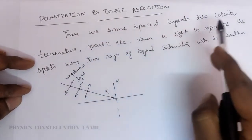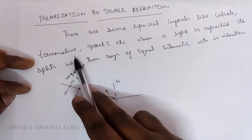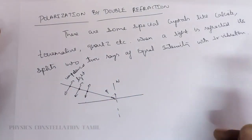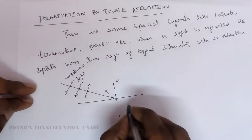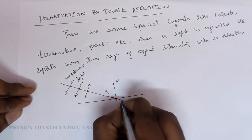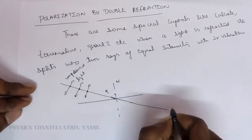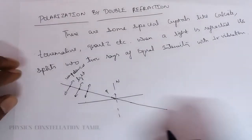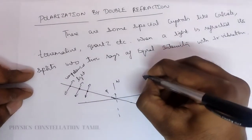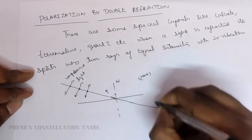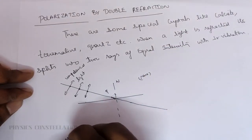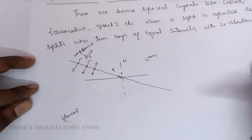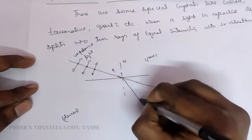There are some special crystals like calcite, quartz, tourmaline, etc. When light is refracted, it splits into two rays. One ray will pass without any deviation — it passes straight through. And the other ray starts to refract. Say this is a rarer medium and this is a denser medium, so that second ray deviates.